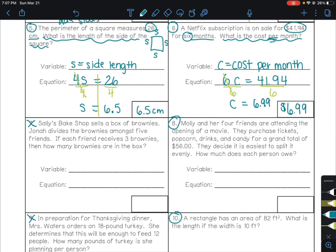Number eight. So Molly and her four friends are attending the opening of a movie. They purchase tickets, popcorn, drinks, and candy for a grand total of $56. They decide it is easiest to split it evenly. How much does each person owe? So Molly and her four friends. So that's going to be five people. And then they have a total of $56. And they're going to split it up. So if we were just reading this, splitting it up tells us we're using division. So your solve step would be to divide. That means when we write our equation, we're going to see the inverse of division. We're going to see multiplication. For our variable, how much does each person owe?